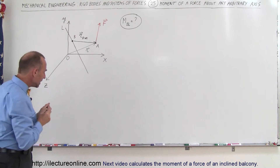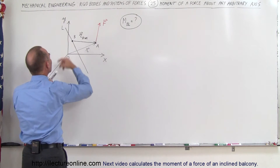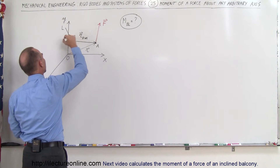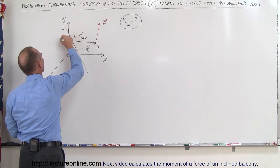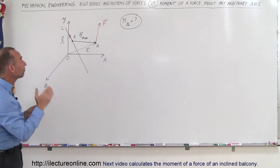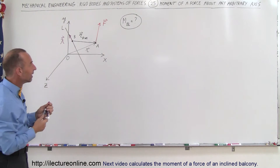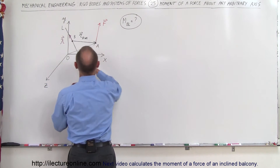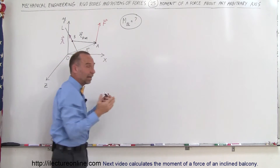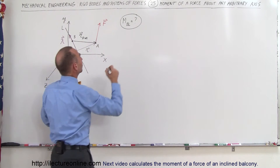We also need a unit vector along the line from B to L. This unit vector has magnitude 1 in the direction of the line from B to L. We can then say that the moment about the line from B to L is a representative way of saying along that arbitrary axis.